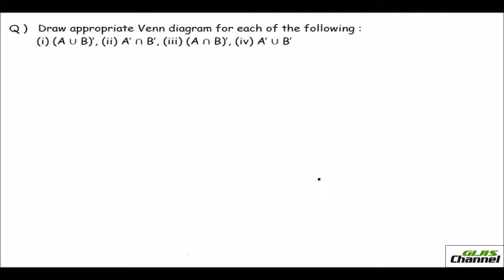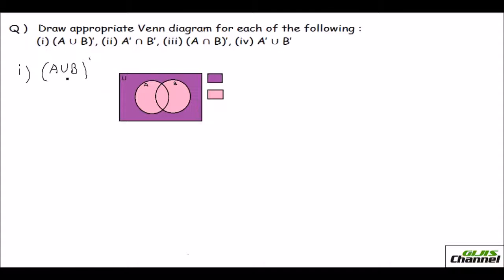Now I have taken a few questions to show in a Venn diagram. The first one says (A union B) complement. First you find A union B — I colored that pink portion — and then the complement is the area outside A union B but still inside the universal set. So that would be (A union B) complement.